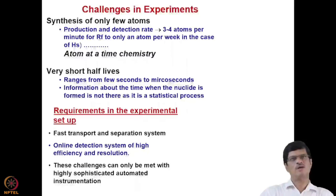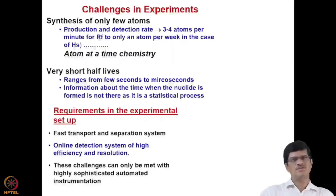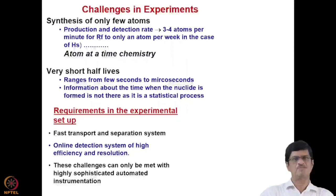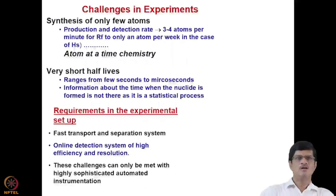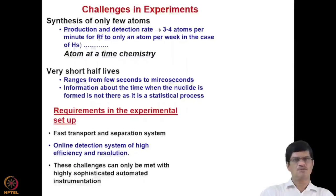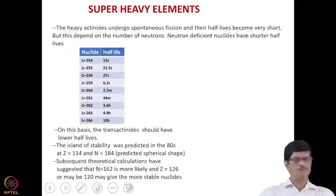This is called single atom chemistry or 'atom at a time' chemistry, where chemical reactions are carried out dealing with only one atom at a time. There are very short half-lives ranging from a few seconds to microseconds, and uncertainty about exactly when the nuclide is formed, as it is a statistical process. Thousands of experiments must be carried out continuously over several days. The experimental setup requires a fast transport and separation system, an online detection system of high efficiency and resolution, met with highly sophisticated automated instrumentation.